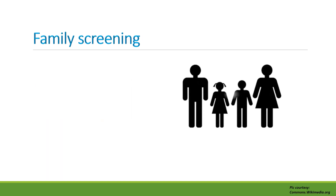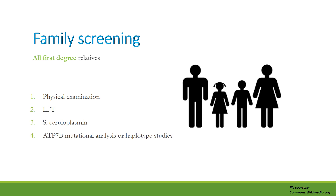One must screen all first-degree relatives, i.e. parents, children, and direct siblings. Screening involves four components: physical examination, liver function tests, serum ceruloplasmin, and ATP7B mutational analysis or haplotype studies.